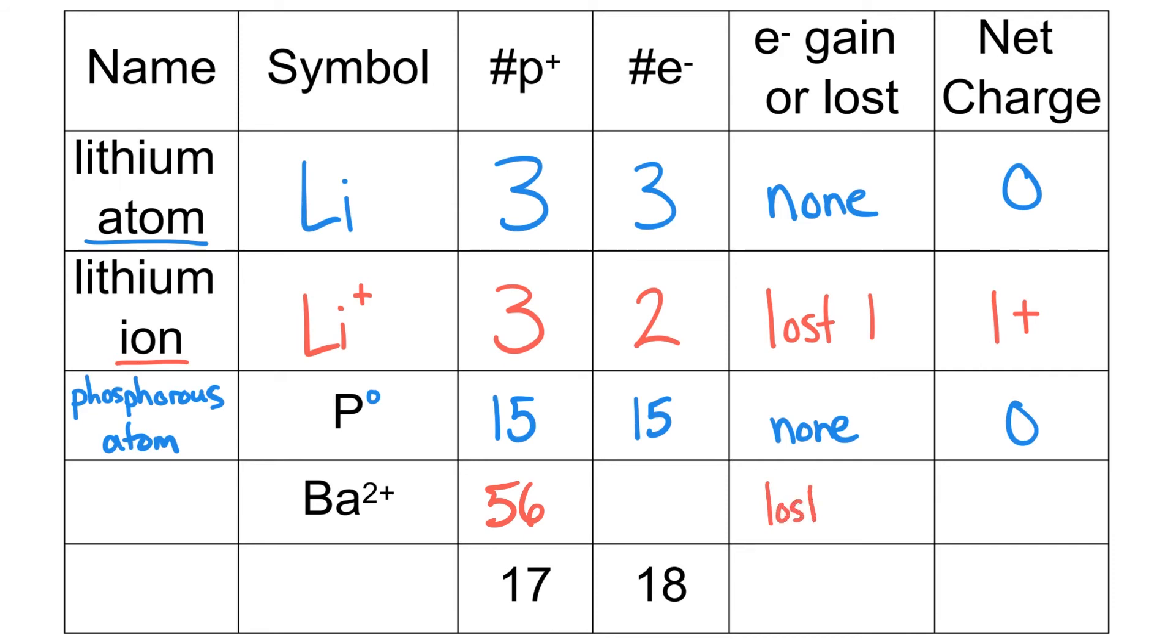It's a 2+ charge, so that means that they have lost 2 electrons for a 2+ charge, and 2 less than 56 is 54. When I name this ion, it's going to be called the barium ion since it's a cation.